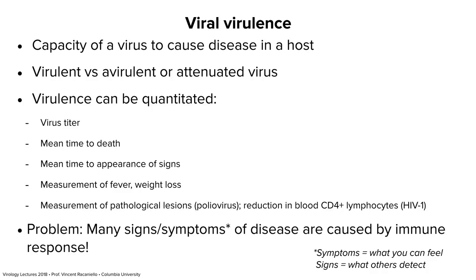If a virus causes disease, we call it a virulent virus. Some viruses do not cause any disease and they're avirulent or attenuated. The ability to replicate in an animal is not enough to cause disease — it's necessary but not sufficient. Replication may not be accompanied by disease, and therefore the virus would not be virulent.